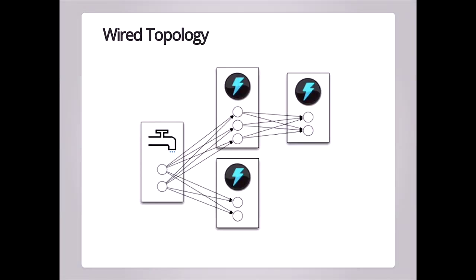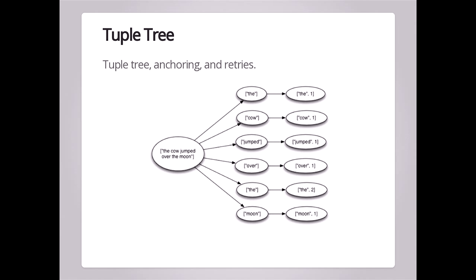A wire topology might look like this: on the left you have the Storm spout generating data, and then you might have several Storm bolts. In this case the directed graph starts with two bolts where the data splits out, and then a third bolt receiving data from one of the two earlier bolts — all modeled in the topology. Storm also has a notion of a tuple tree, meaning it understands the source of every piece of data moving through your system, so that if a node goes offline mid-processing, Storm knows where that data originated and is able to replay the original tuple.